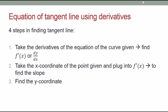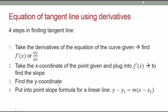The third step: find the y-coordinate by substituting the x-coordinate into the original equation. The fourth step: put the values into the point-slope formula, which is y − y₁ = m(x − x₁), where m is the slope of the curve.